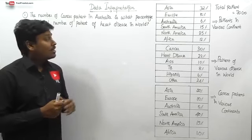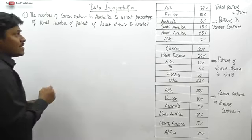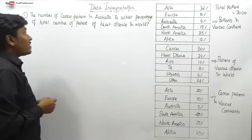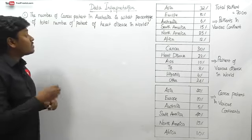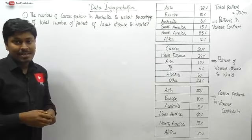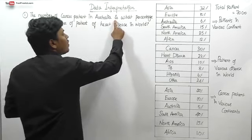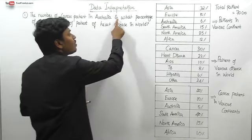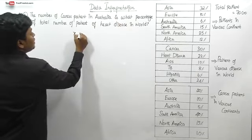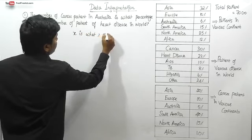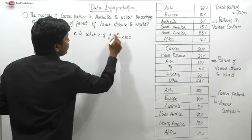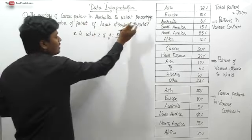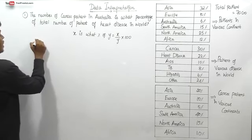Question number one: the number of cancer patients in Australia is what percentage of the total number of patients of odd disease in the world? We need to carefully solve these types of questions, which appear in the toughest level exams. When a question is in the format 'is what percentage,' it follows the format: x divided by y into 100. Here, x is cancer patients in Australia and y is odd disease patients in the world.